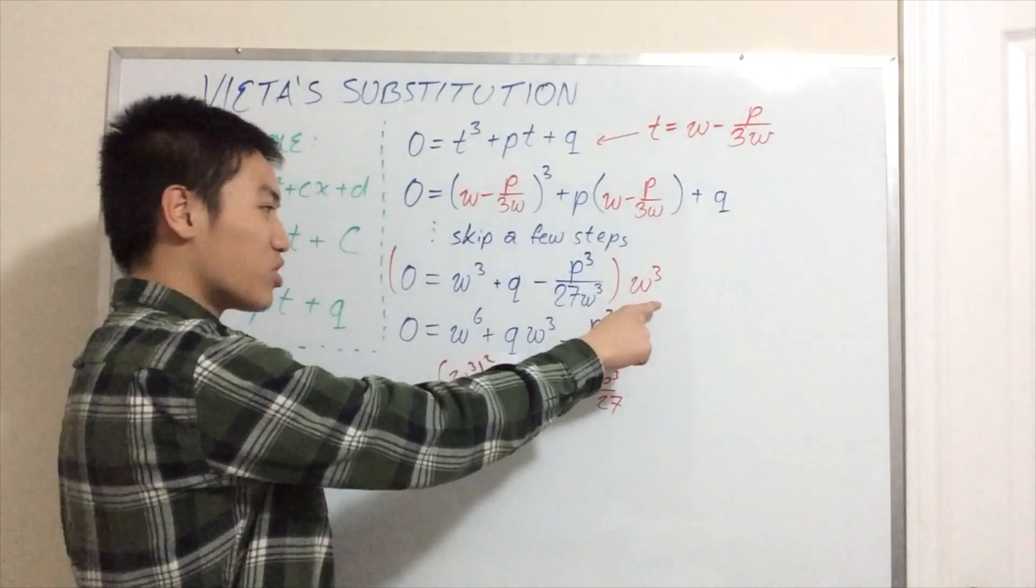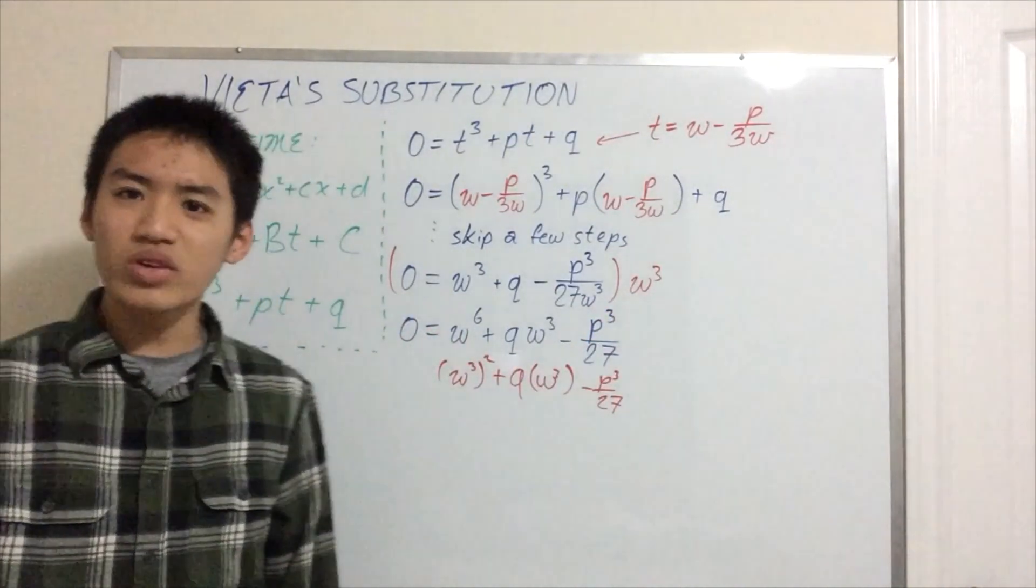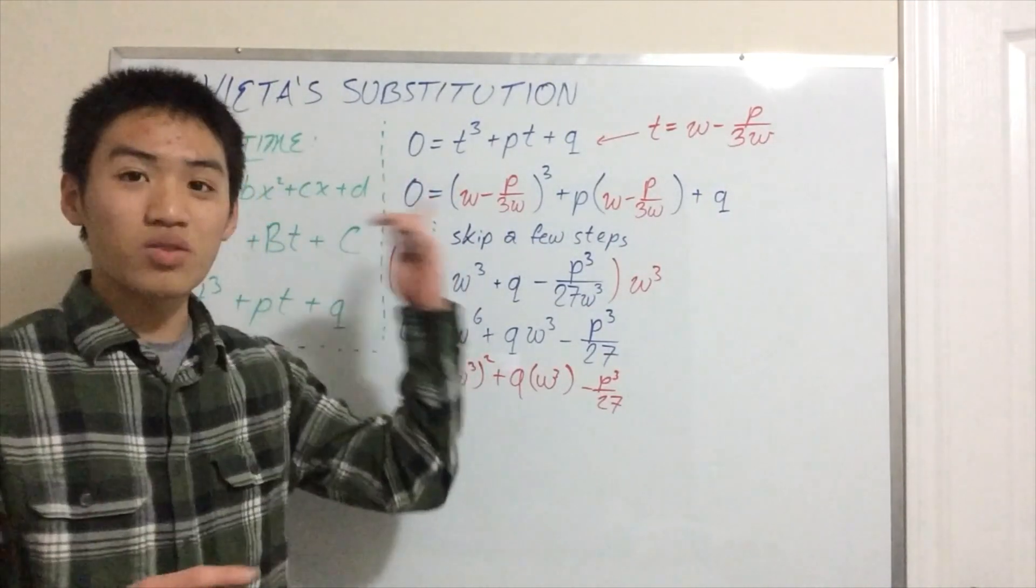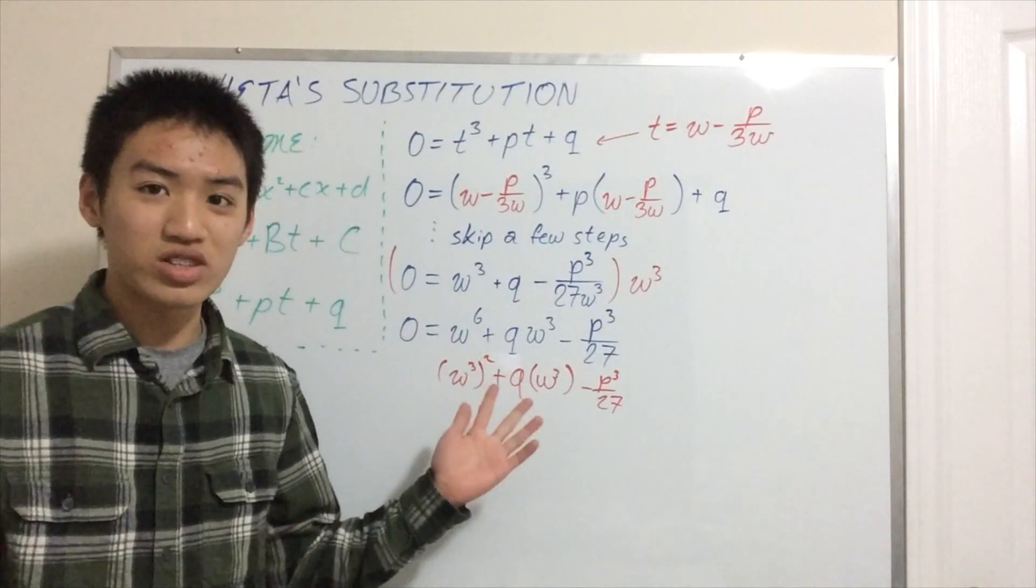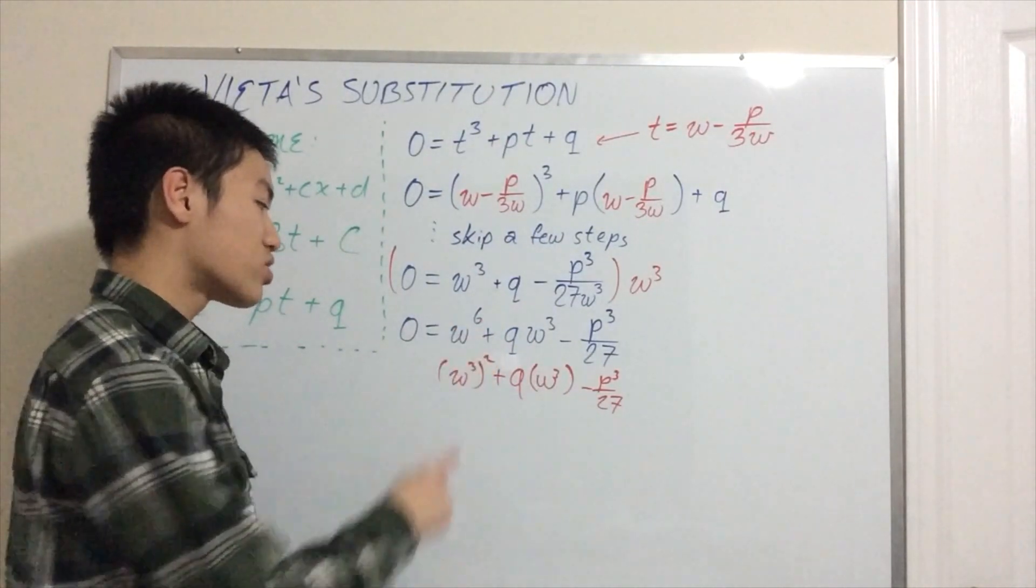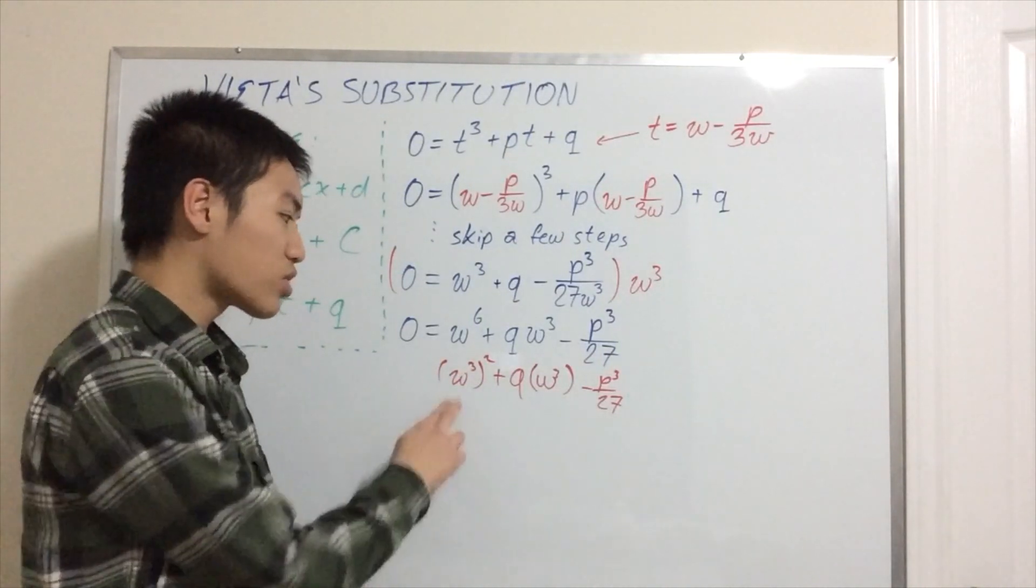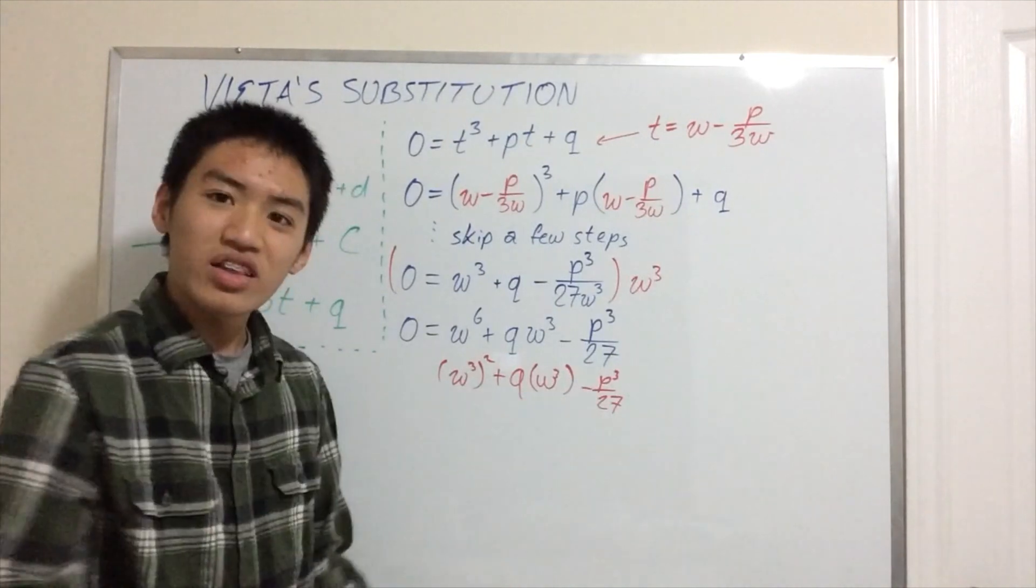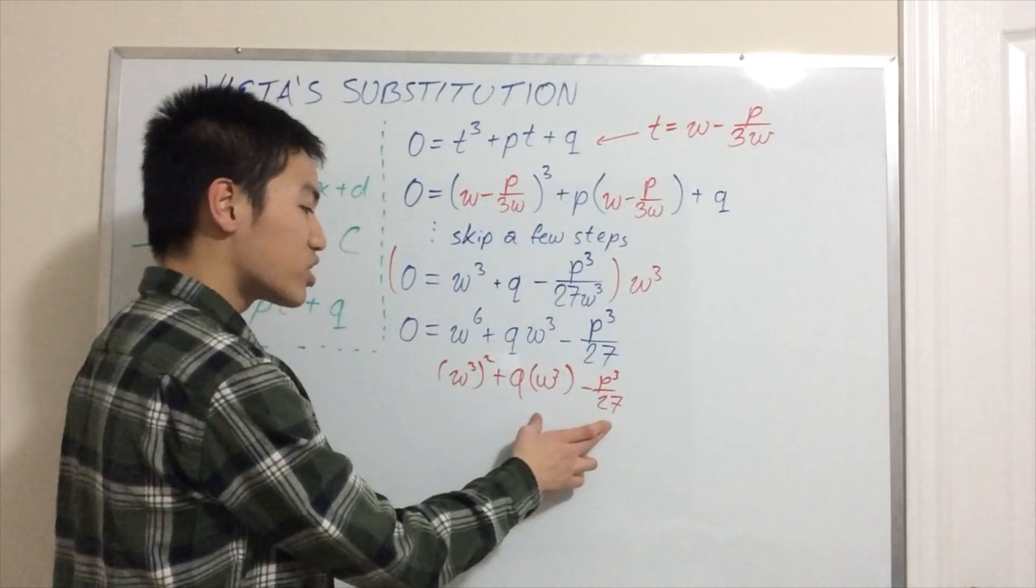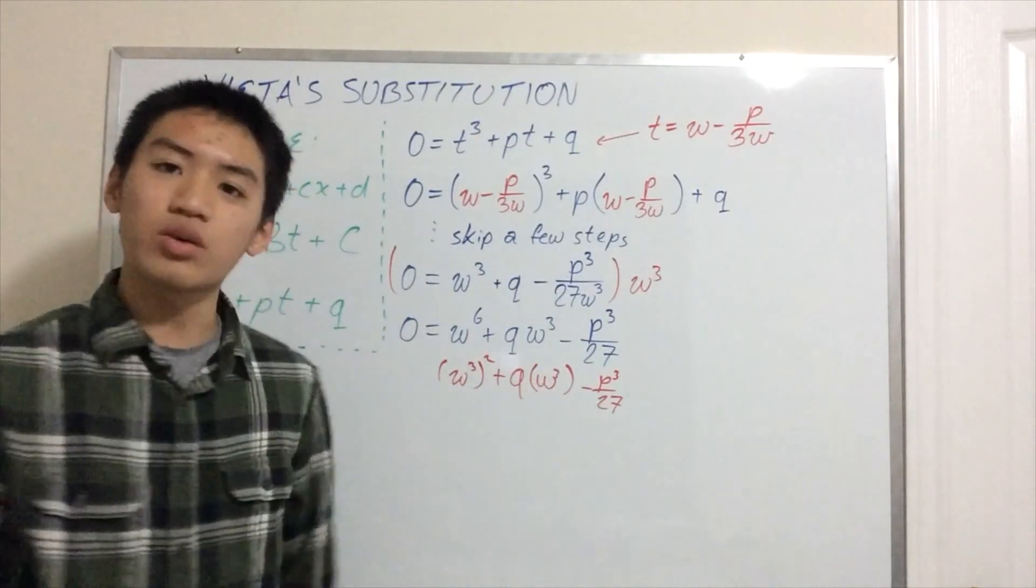We'll multiply by w³, and now we have degree 6, a sextic equation. Why did we do this? In fact, this is easier than the cubic equation, because it's just a quadratic equation, but disguised. So we'll notice w⁶ is just (w³)². We rewrite it, and we have something squared plus q times something, then plus something, your arbitrary constant. So these are your coefficients of the quadratic equation. This is your independent variable, w³.